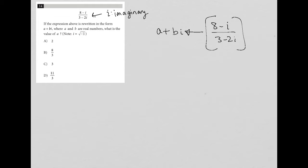the question says rewritten in the form a plus bi. So what can I do with this fraction here to simplify it? So if you recall, we don't like to have imaginary numbers in the denominator.